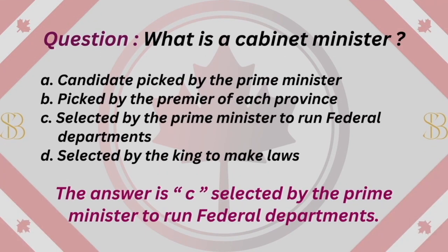Question: What is a cabinet minister? A. Candidate picked by the Prime Minister. B. Picked by the Premier of each province. C. Selected by the Prime Minister to run federal departments. D. Selected by the King to make laws. The answer is C. Selected by the Prime Minister to run federal departments.